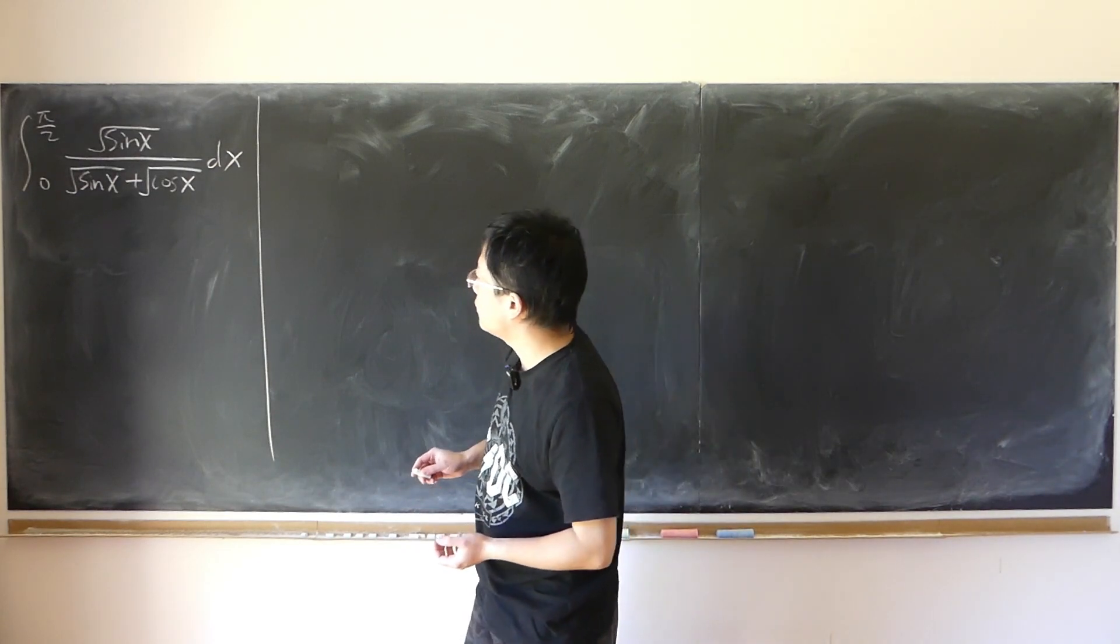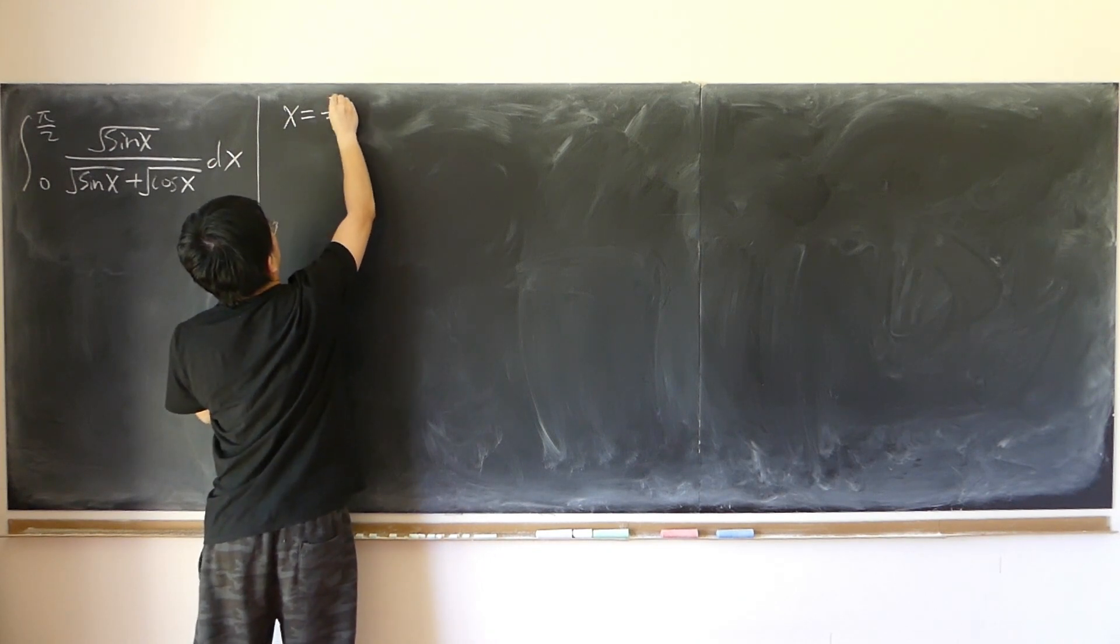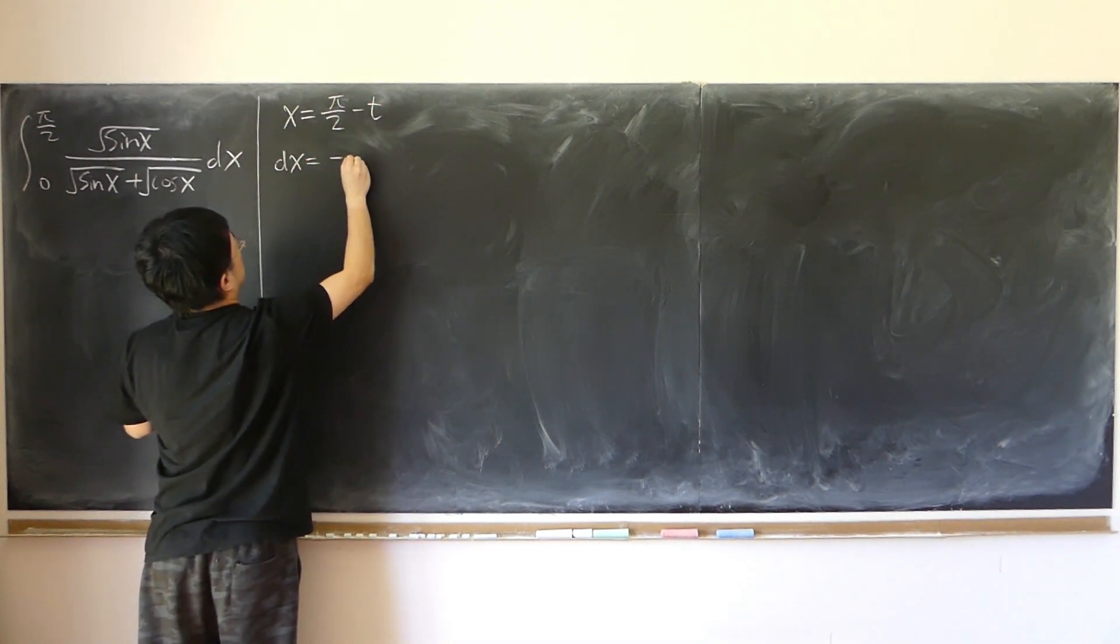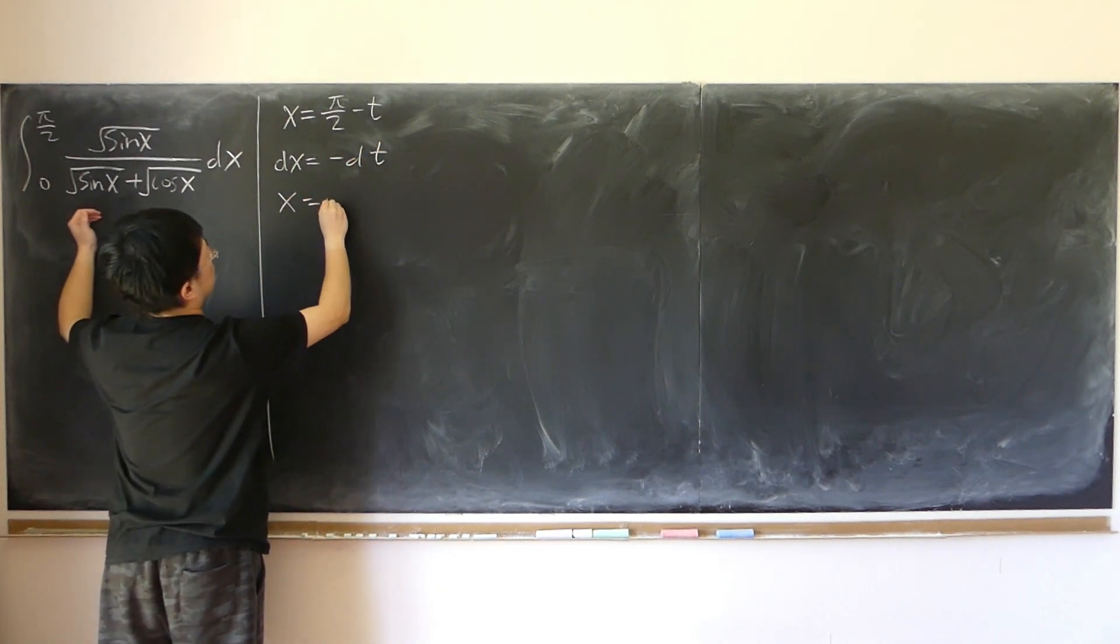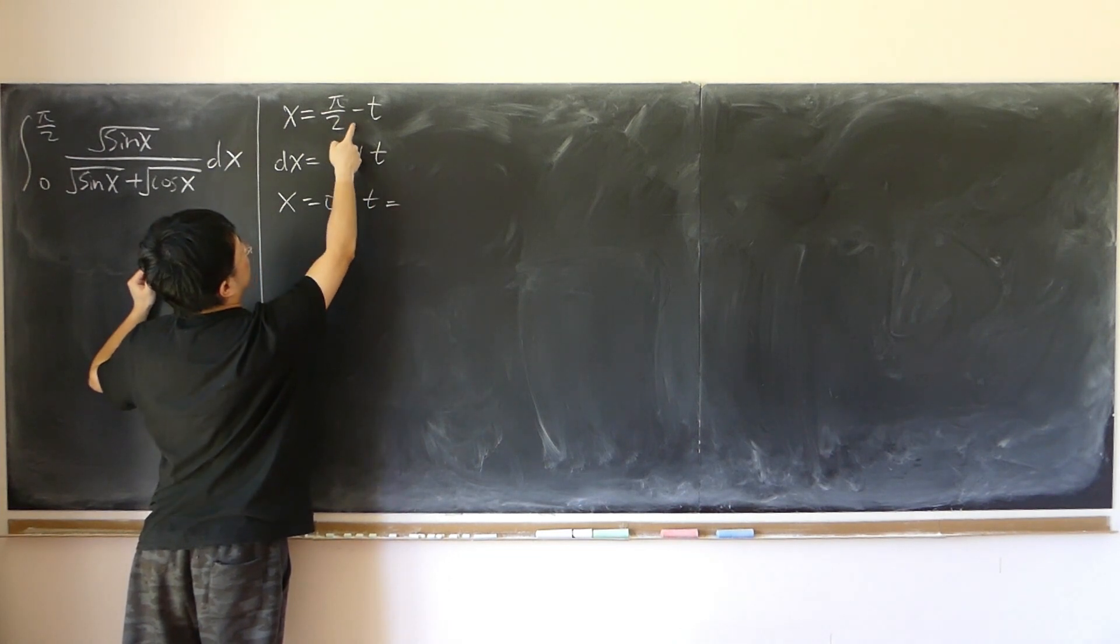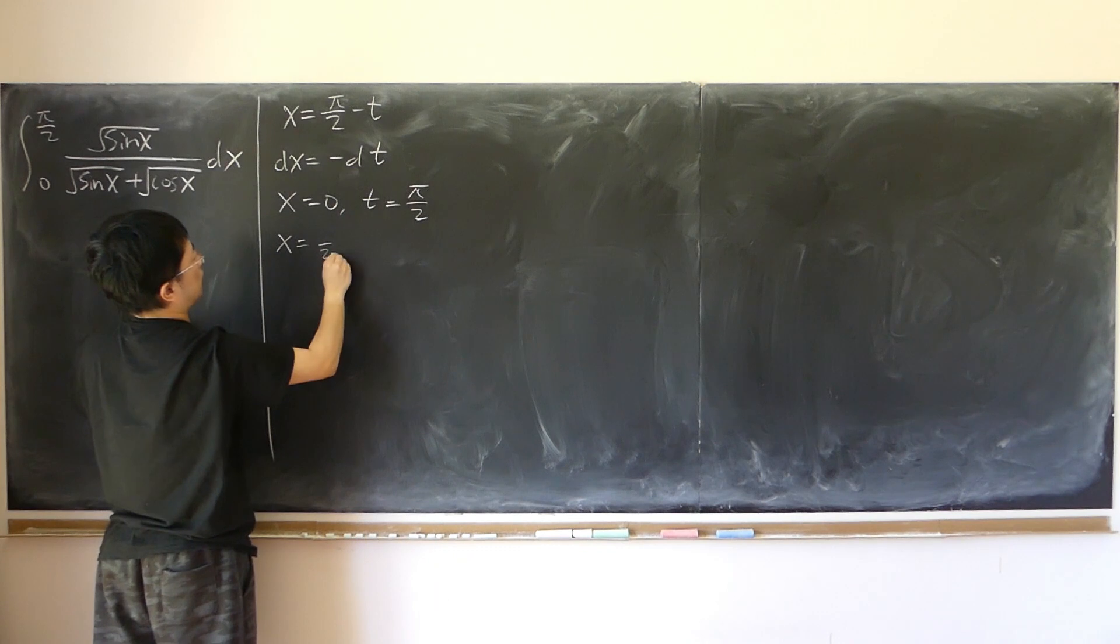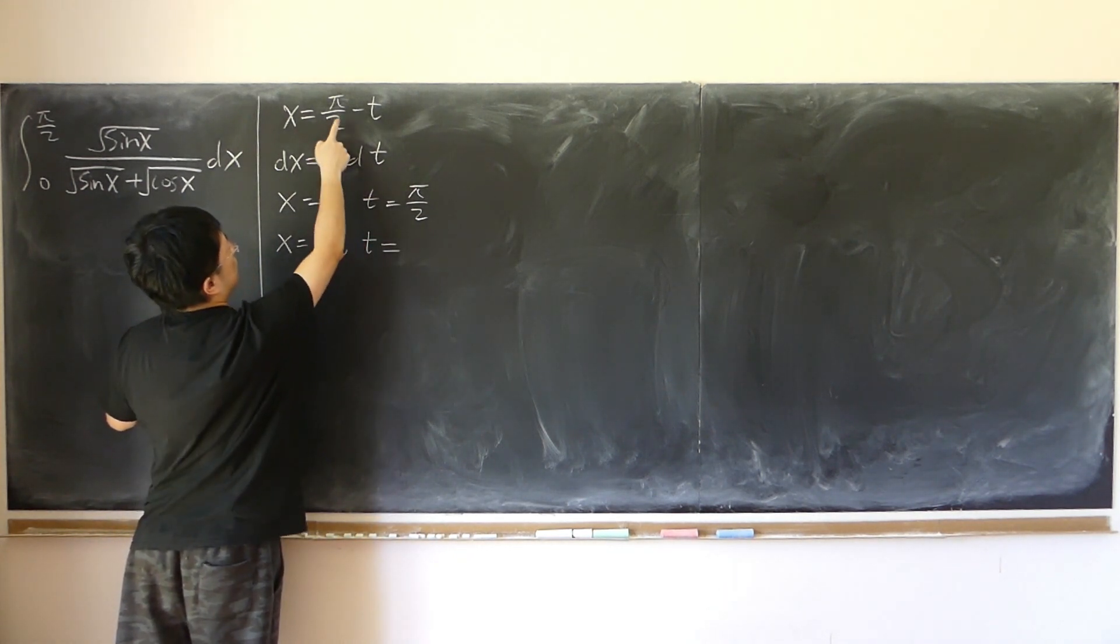But somehow, if we make the substitution x equals one-half pi minus t, then dx becomes negative dt. When x is equal to 0, t will be equal to one-half pi. And when x is equal to one-half pi, then the boundary becomes 0.